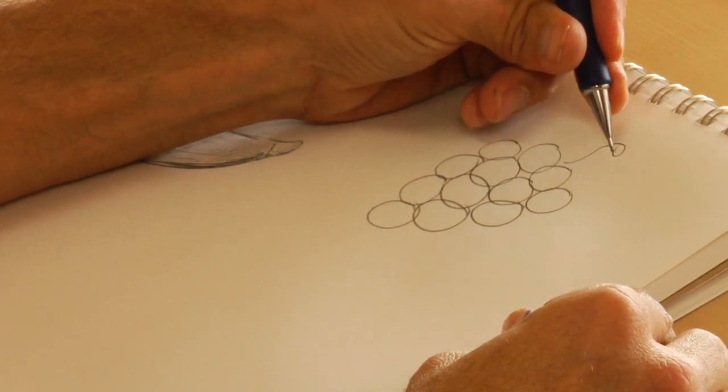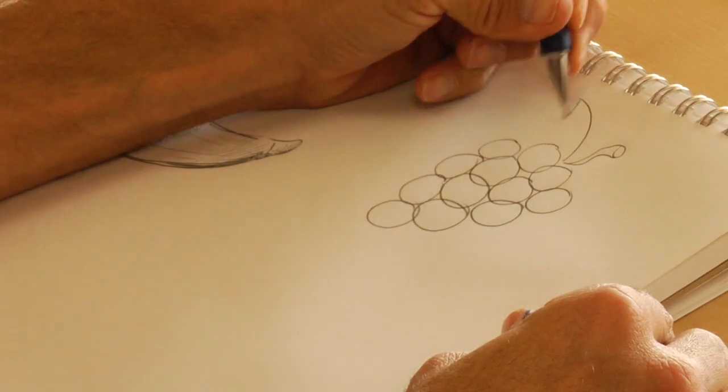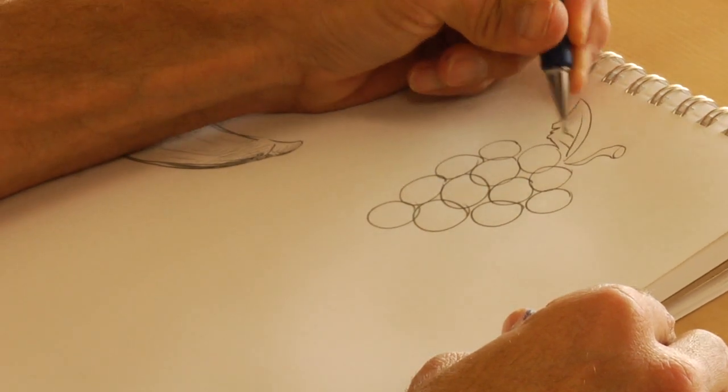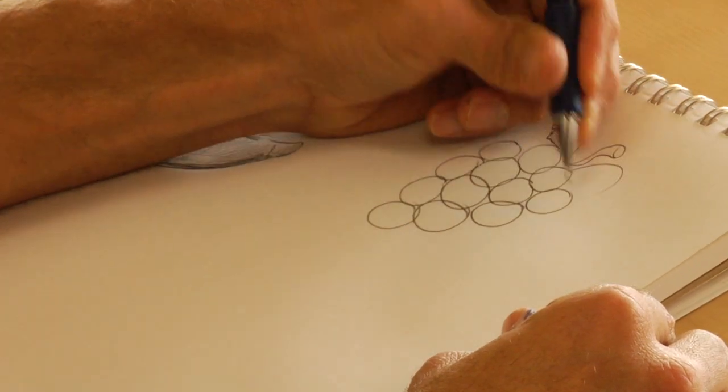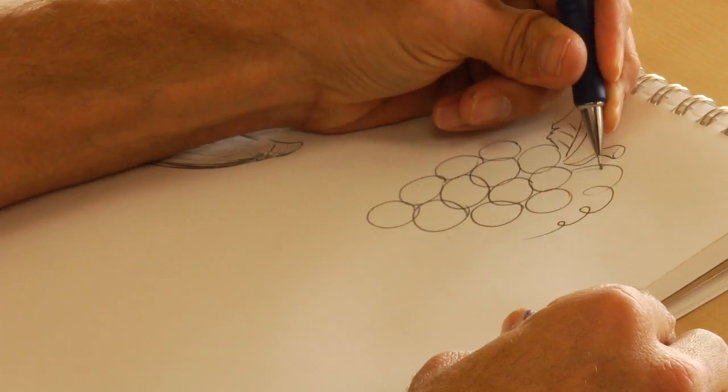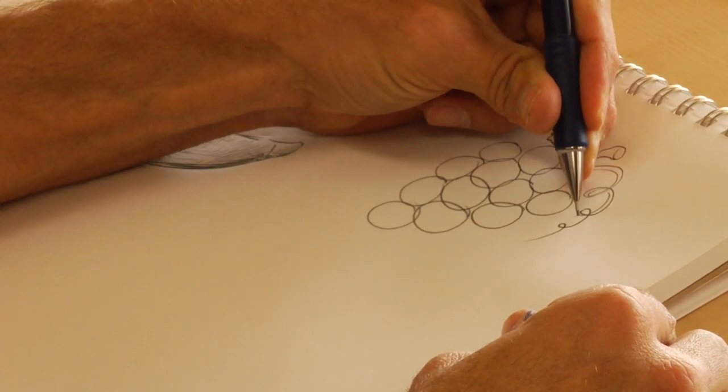throw a stem out there, a leaf maybe, and very important is like a little tendril that always seem to accompany the grape.